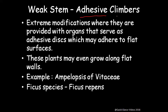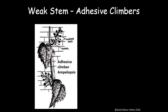Another type of weak stem is adhesive climbers — an extreme modification where plants are provided with organs that serve as adhesive discs which adhere to flat surfaces. You may have seen in buildings where these plants climb up walls acting as adhesives. Examples include Ampelopsis (Vitaceae), Ficus species, and Ficus repens. The picture shows a wall with the plant climbing using adhesive discs.